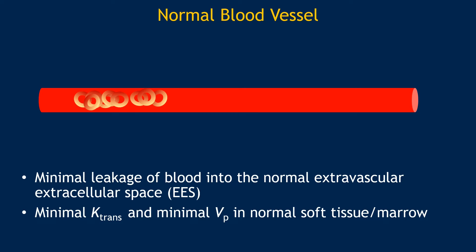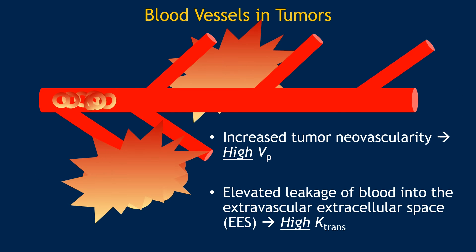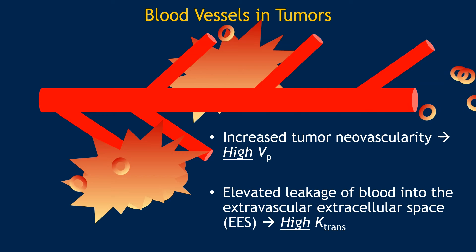A normal blood vessel does not have much leakage and does not go outside the normal vasculature space. There will be minimal K-trans and minimal VP in normal soft tissue and marrow as red blood cells traverse. However, in tumors there is a lot of vascularity and neovascularity, so there will be a lot of vascular perfusion to these tumors, and it can also cause leakage. So there will be high VP and high K-trans oftentimes, as you can see here.